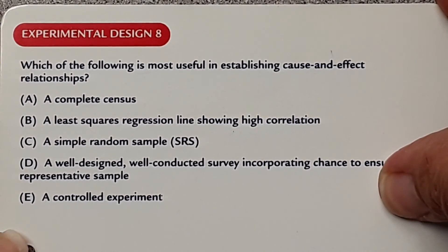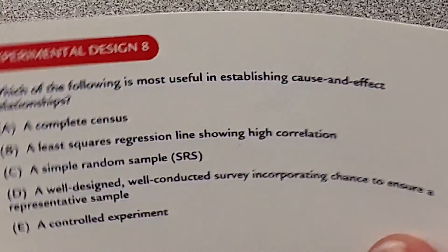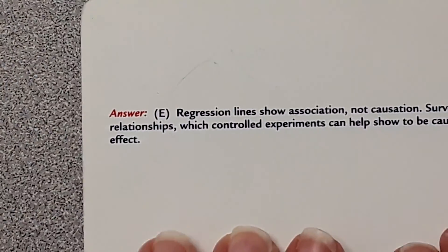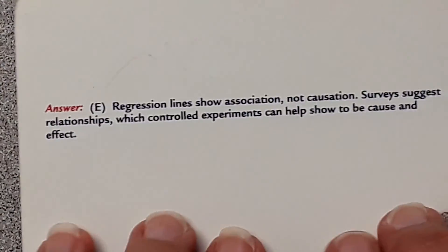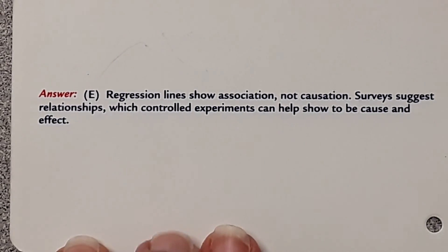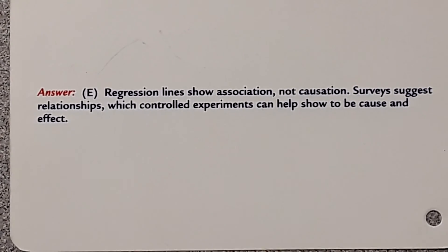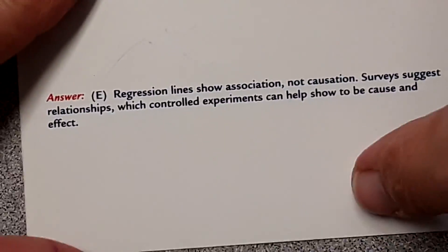The answer is E. You should know that a regression line shows association, not causation. Surveys suggest relationships but not cause and effect. The only method that establishes cause and effect is a controlled experiment.